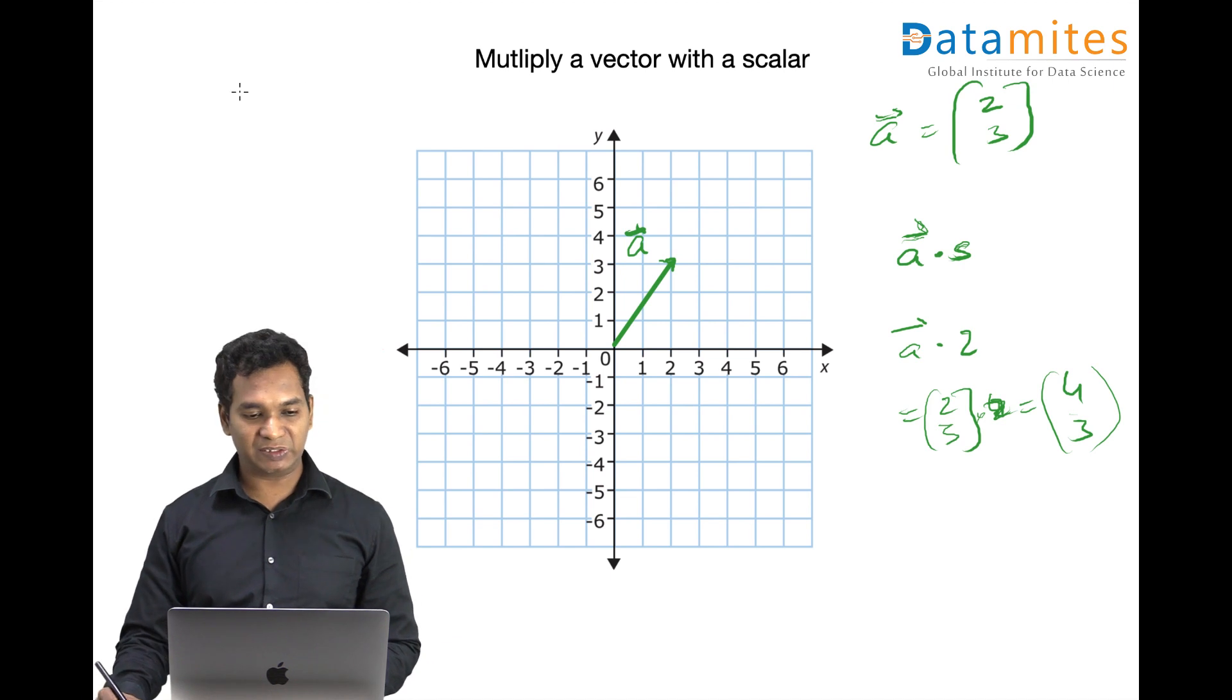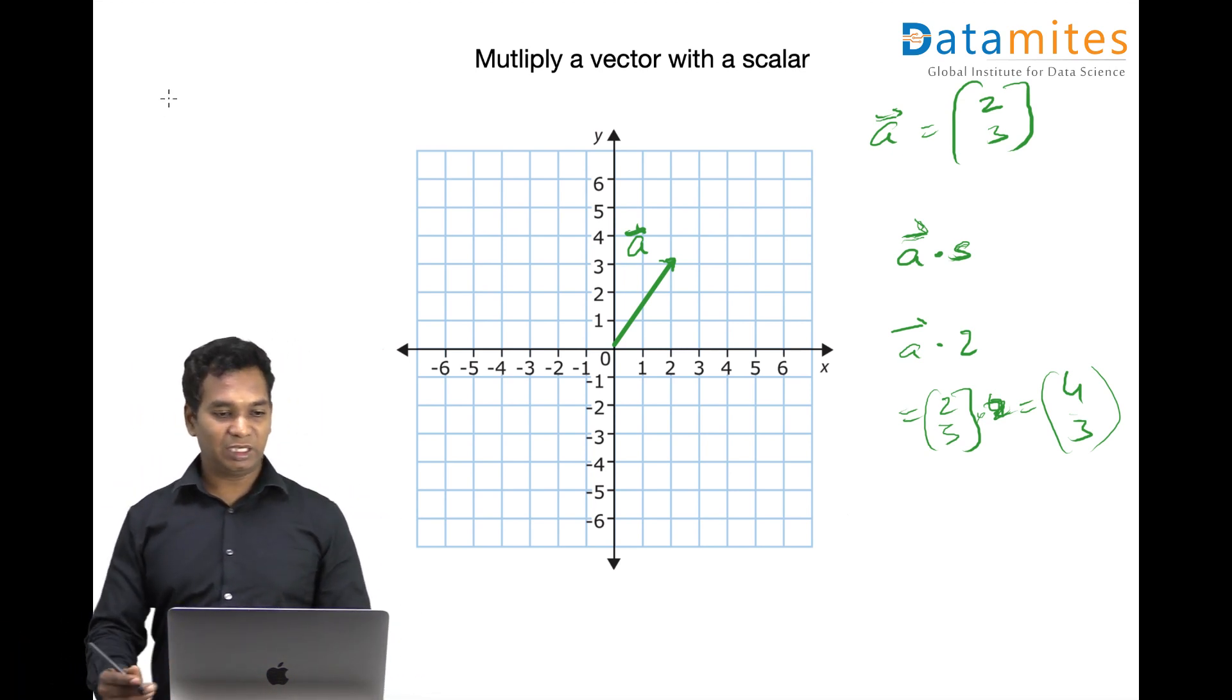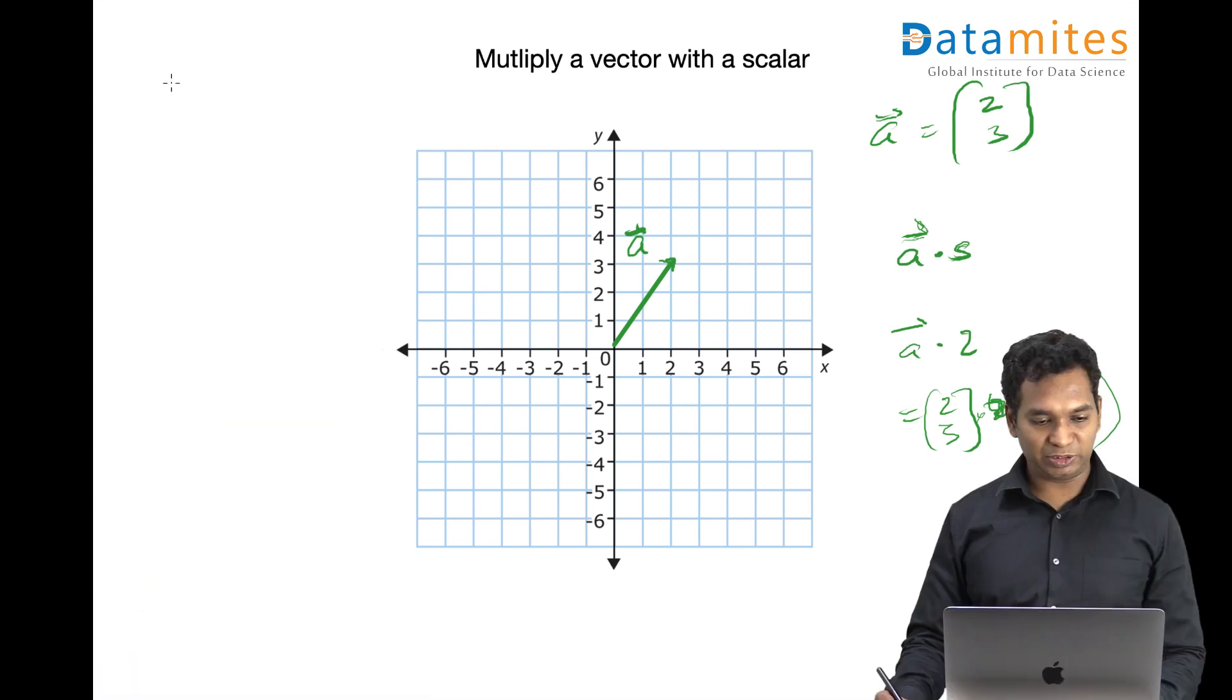If you remember your matrix properties - matrices are coming next in the series, we'll discuss a lot about matrices - but just to quickly tell you, if you have a matrix of 3 cross 2 and 2 cross 4, if you multiply this matrix, one of the conditions is...